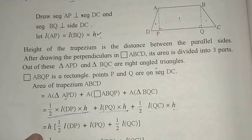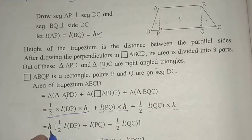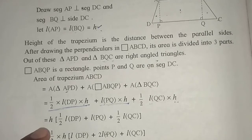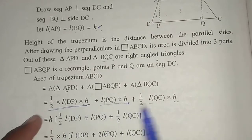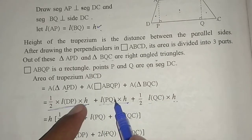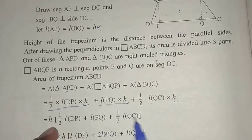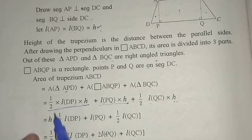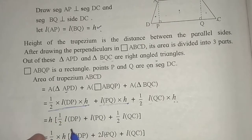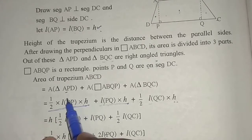In all three formulas, H is common. So H is taken out as a common factor and the remaining terms are placed in brackets.